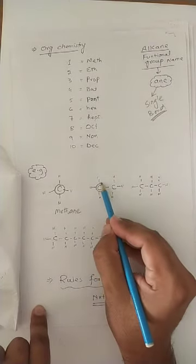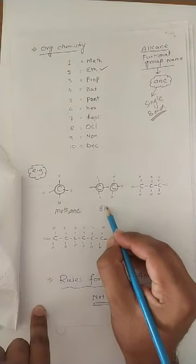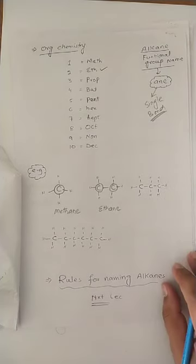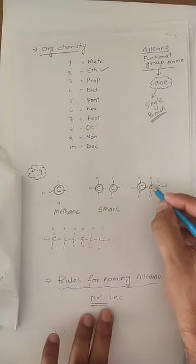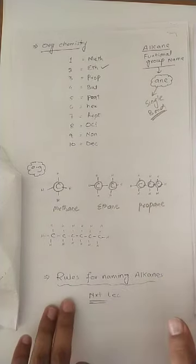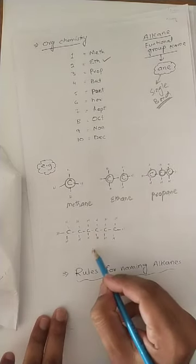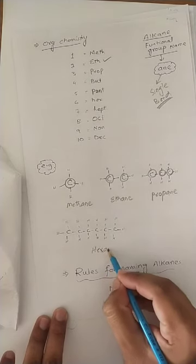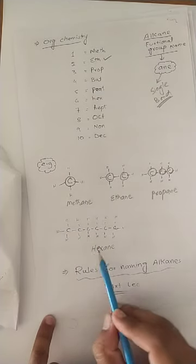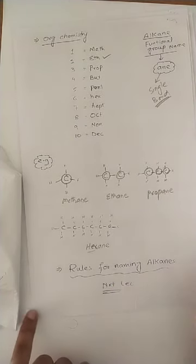Carbon kitne? Two. For two, we use eth. And the bonds which is carbon-carbon are single, we use 'ane'. So this is called ethane. Similarly, three - prop and ane - propane. Similarly, one, two, three, four, five, six - six, we use hex, and bond is single, so this molecule is hexane. One, two, three, four, five, six - hex, and A-N-E represent single bonds.